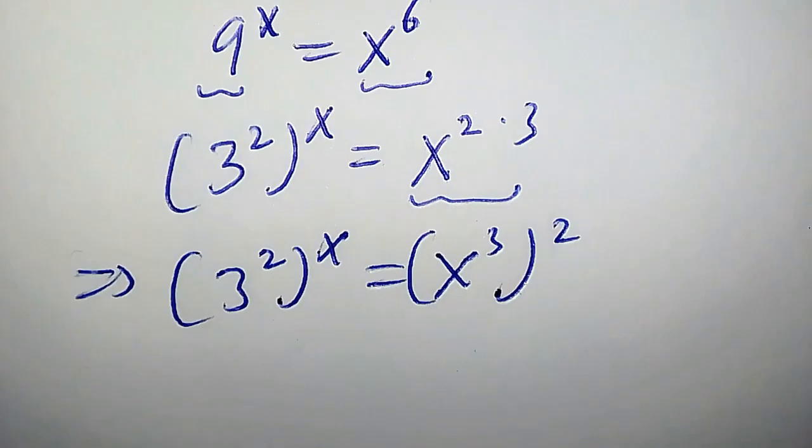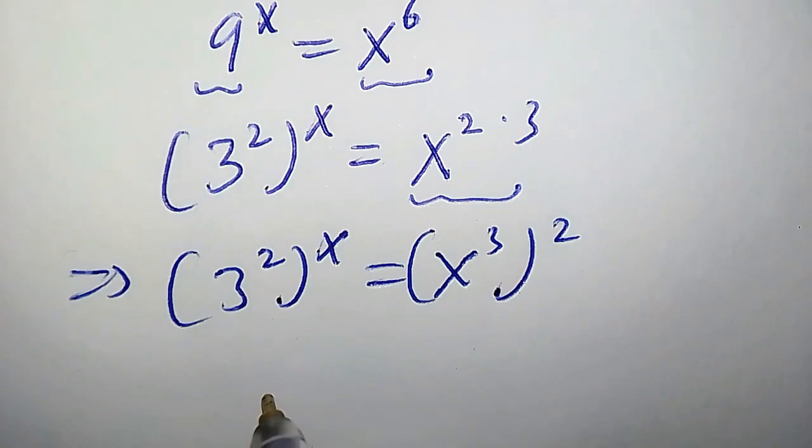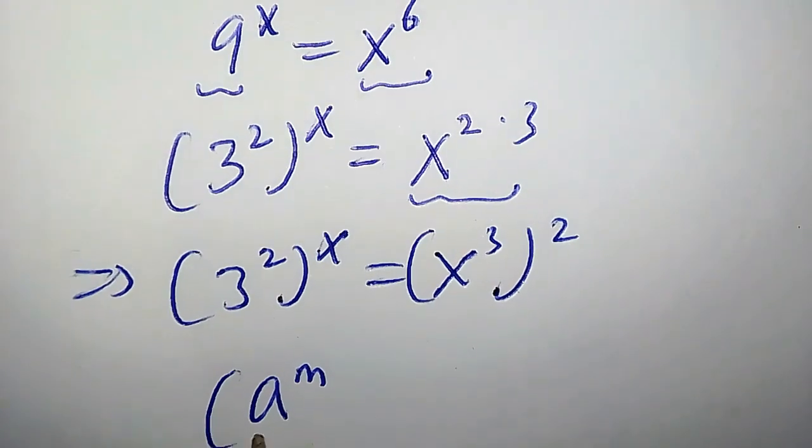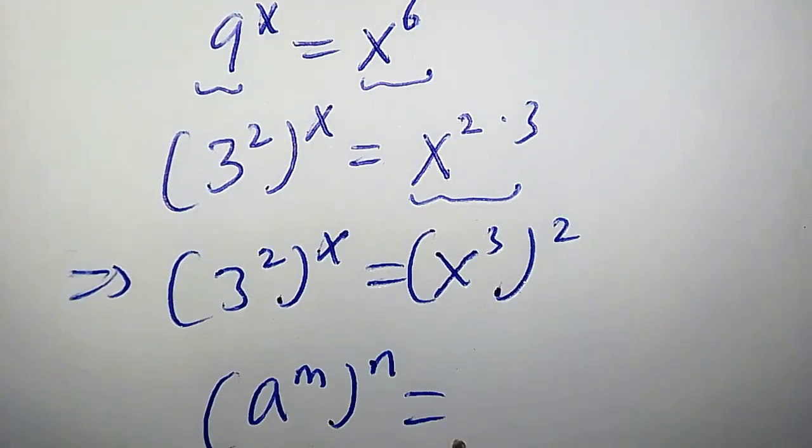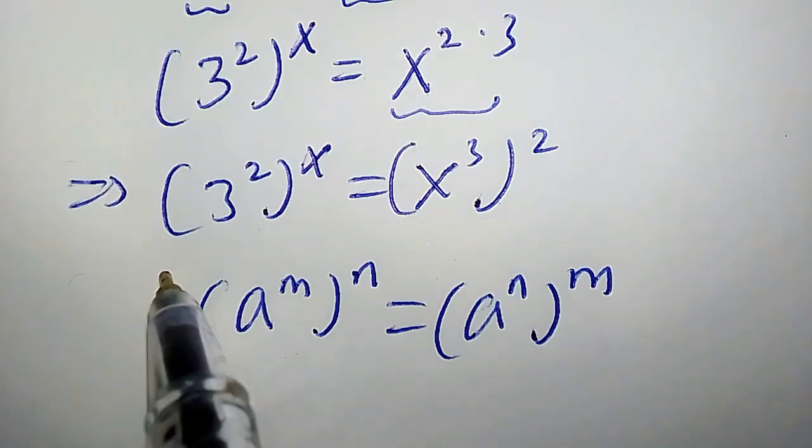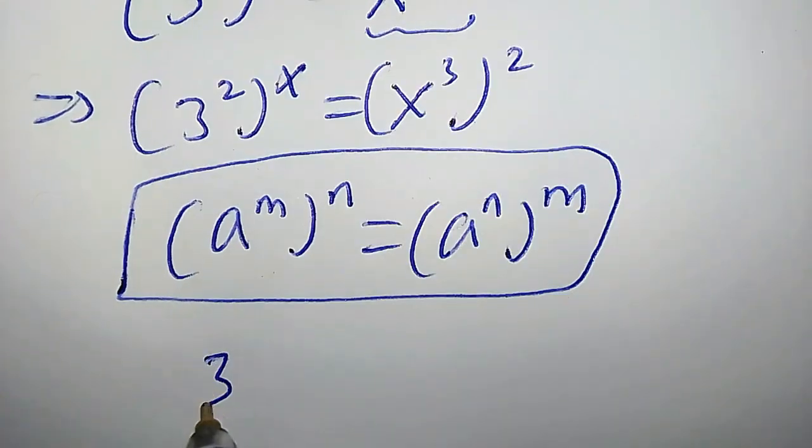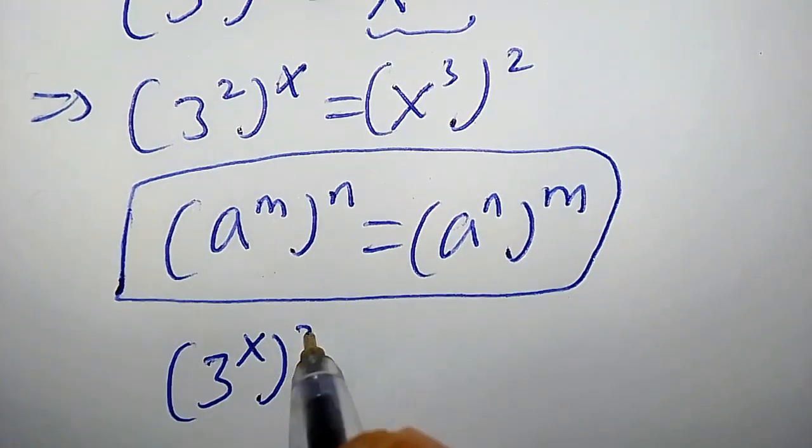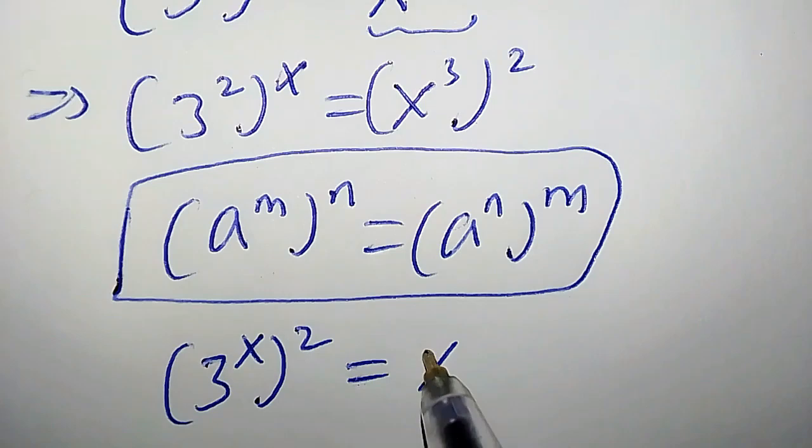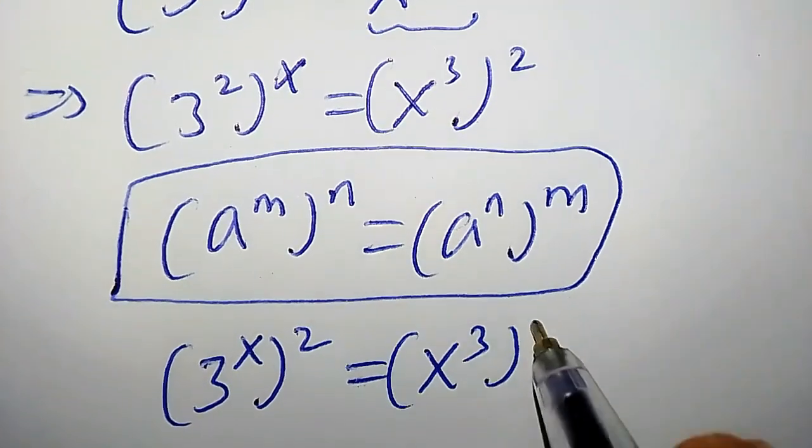Let's proceed further. Now recall the power rule. It says whenever we have a to the power of m times n, this equals a to the power of n times m. Applying this property to the left hand side, we're going to have 3 to the power of x times 2 equals x to the power of 3 times 2.